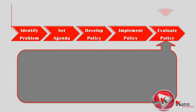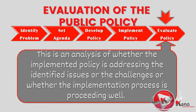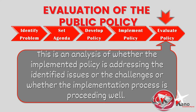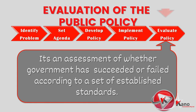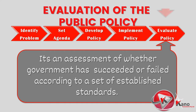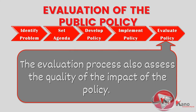The final step in the public policy process is the evaluation stage. This is where an analysis and review is performed to check whether the policy, as implemented, is addressing the identified issues or challenges, and whether the implementation process is proceeding well. It is during the evaluation stage that government or any other interested stakeholder assesses whether the implemented policy has succeeded or failed in addressing the issues first identified. The assessment will usually be based on a set of established standards, and the evaluation stage will also assess the quality of the impact of the policy and whether the objectives of the policy have been achieved.